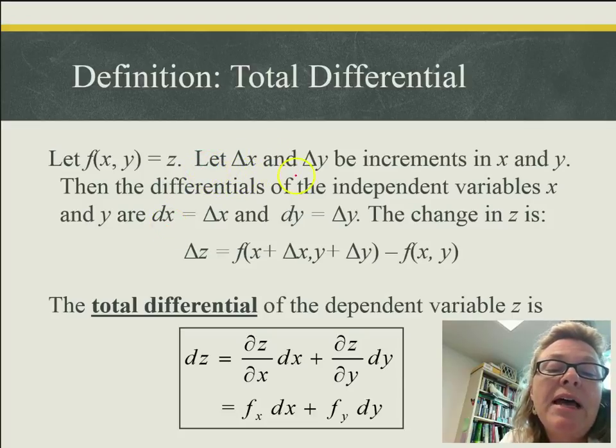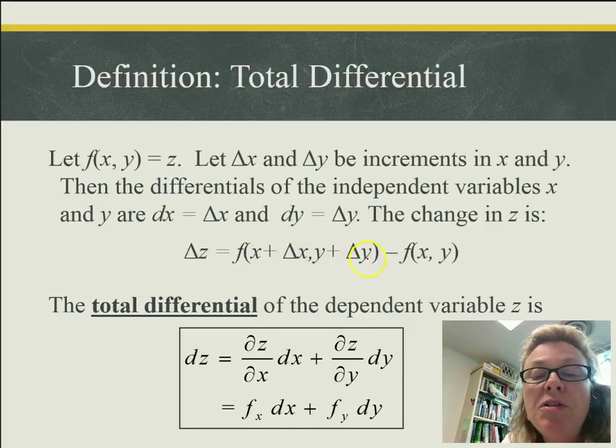So we're going to let delta x and delta y be increments in x and y. Remember, those are independent variables. Then the differentials of the independent variables x and y, similar to what we did in calc 1, we're going to say that dx is exactly equal to delta x. And that since y is an independent variable, dy is also going to be equal to delta y. Now, the change in z is going to be f of x plus that change in x, comma y plus the small change in y, minus f of x and y. And this is going to create our small change in z.